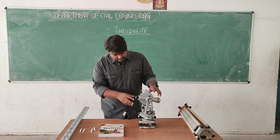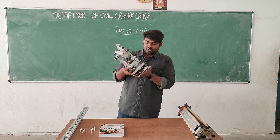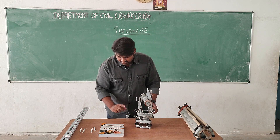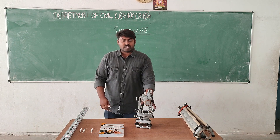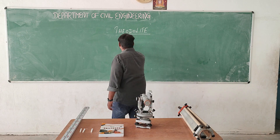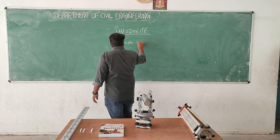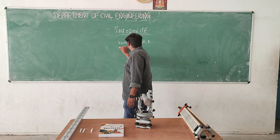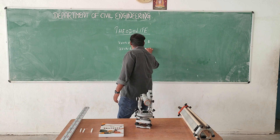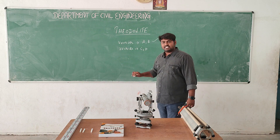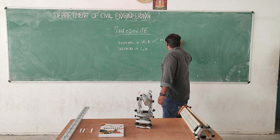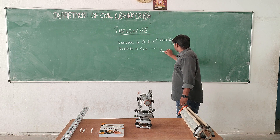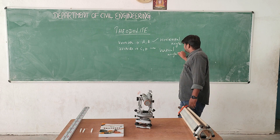There are several parts available in this theodolite. The main concept behind this theodolite is the vernier scales. Vernier A and B are there at the bottom of the scale, and vernier C and D are also available. Vernier A and B are mainly considered for the horizontal angle, while vernier C and D are considered only for the vertical angle.